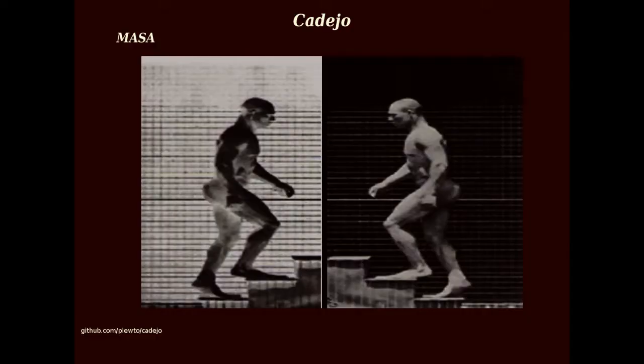MASA is an organ loosely based on the Hammond B3. The name MASA is an acronym for Multiplexed Acoustical Systems of America, the fictional organ manufacturer in Philip K. Dick's We Can Build You. Technically, MASA uses a highly restrictive form of additive synthesis. As with the B3, nine sine wave partials are combined to produce a composite tone. By default, MASA uses the same frequency gamut as the B3, but is free to use any set of partial frequencies. For effects, MASA uses FreeVerb and a unique Scanner Vibrato.